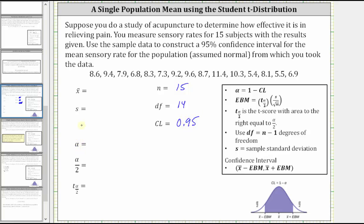Alpha is equal to one minus the confidence level, which gives us one minus 0.95, which is equal to 0.05. Alpha divided by two is equal to 0.05 divided by two, which is equal to 0.025.